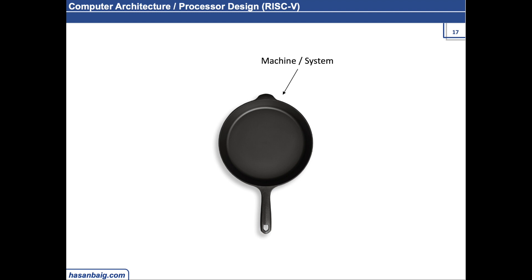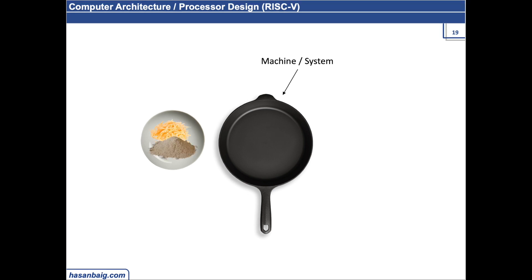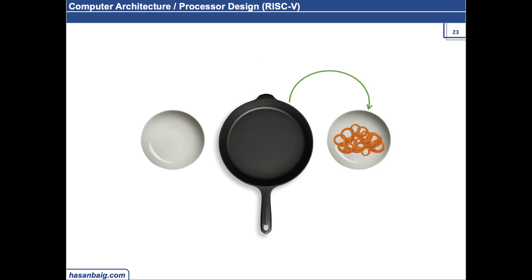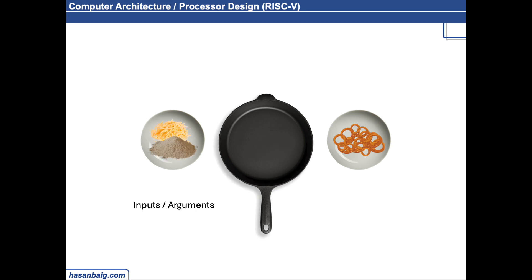Whatever we have to cook in this machine, it has to take some input from somewhere. Suppose that humans are not interacting with it — it should know where it has to collect the ingredients from. So these are the ingredients, suppose they are placed over here. This machine knows that it has to collect the input from this place and use it here. This place where the machine takes the input from is considered as the argument address, the argument register.